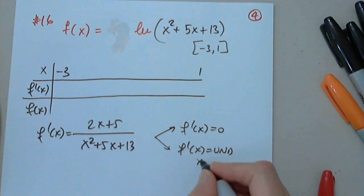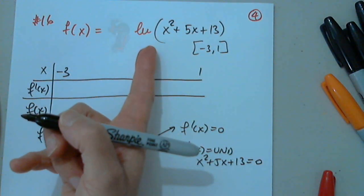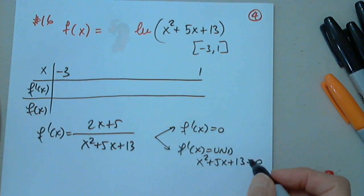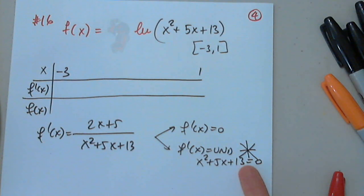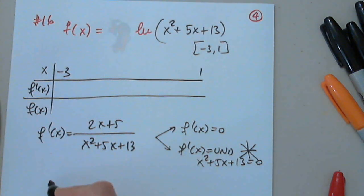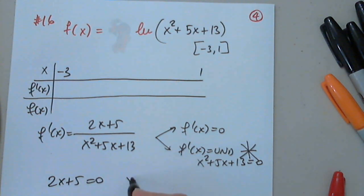But again, the x squared plus 5x plus 13 will not be 0. Because if this is 0, then the function is undefined. So we're not going to have any critical numbers coming from this. So when is the fraction 0? When the top is 0. Right. So we have to write 2x plus 5 equals 0, so x equals negative 5 halves.